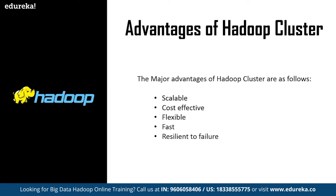The fourth advantage is that Hadoop clusters are fast. Hadoop clusters can process petabytes of data within a fraction of a second. This is possible because of the efficient data mapping capabilities of Hadoop. The secret behind high-speed performance is that the data processing tools are always kept available on the servers — that is, the data processing tool is available on the same unit where the data needed is stored. The fifth advantage is that Hadoop clusters are resilient to failure. Data loss in a Hadoop cluster is a myth — it is practically impossible to lose any data, as Hadoop follows data replication which acts as a backup storage unit in case of a node failure.